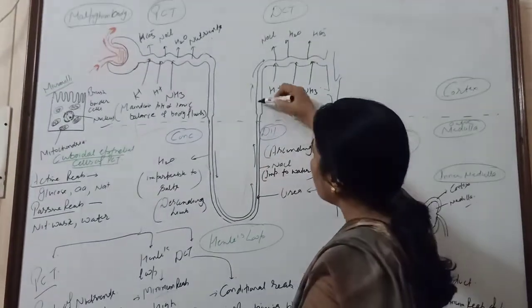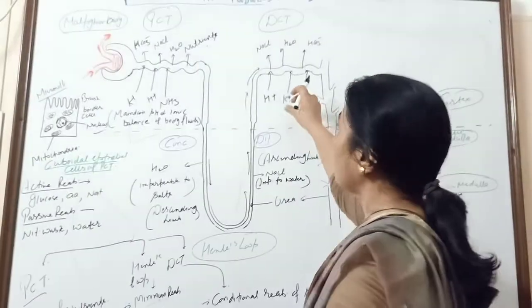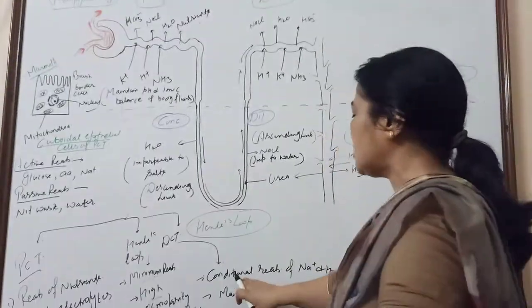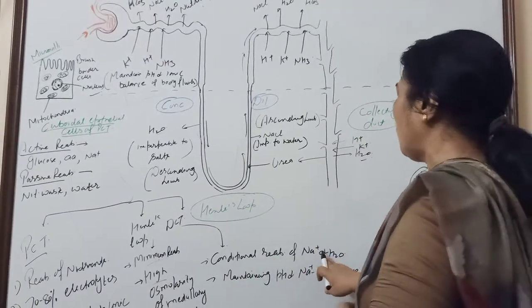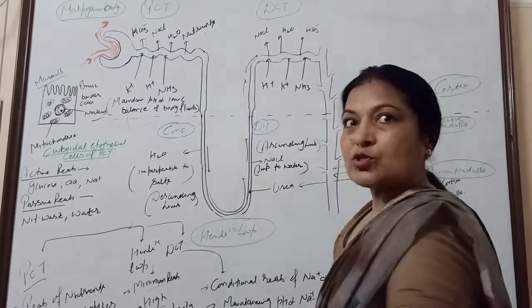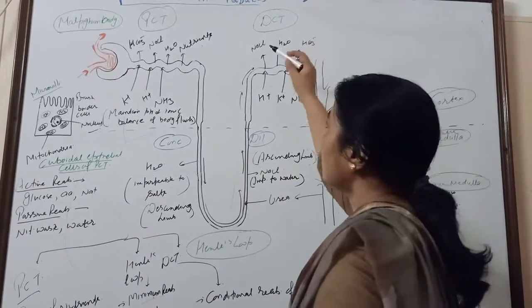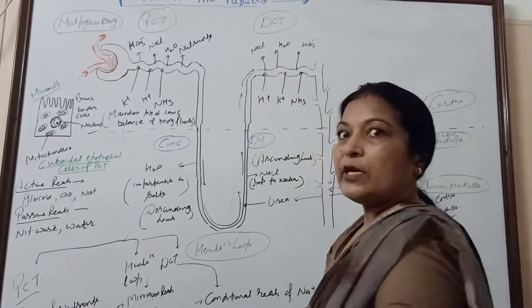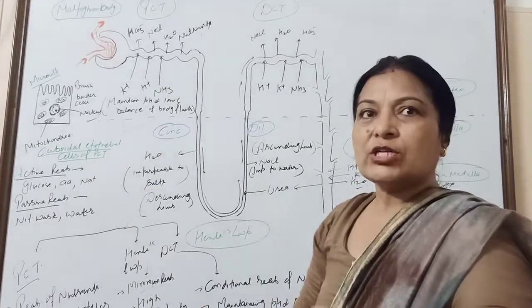Then the third is DCT, the distal convoluted tubules. Its main function is conditional reabsorption of water and sodium. Sodium and water is the conditional reabsorption. Bicarbonate ions also have the absorption of sodium chloride.